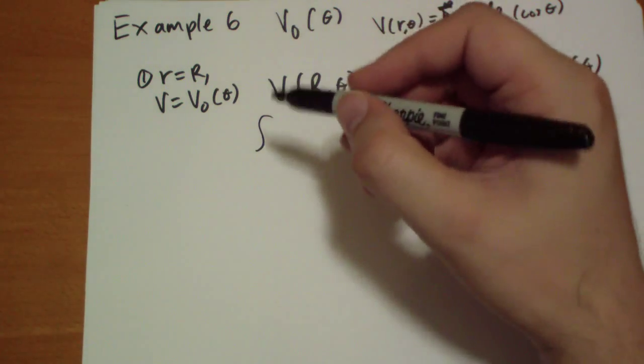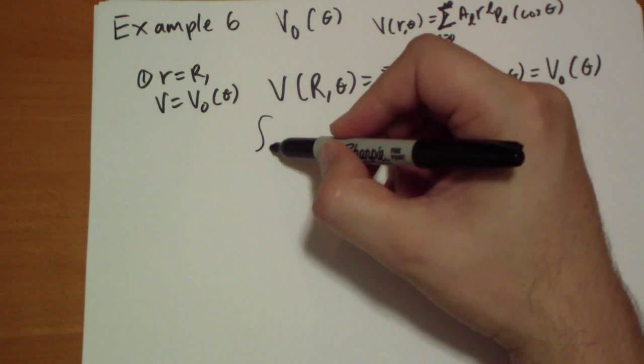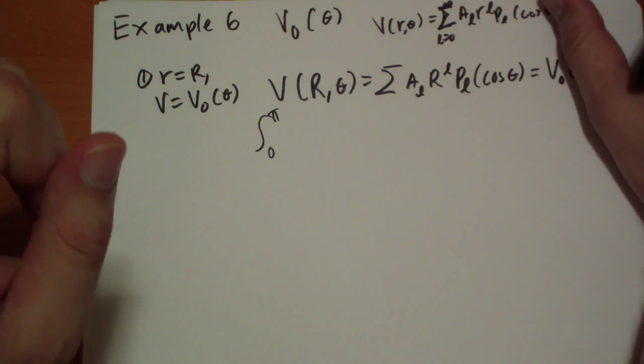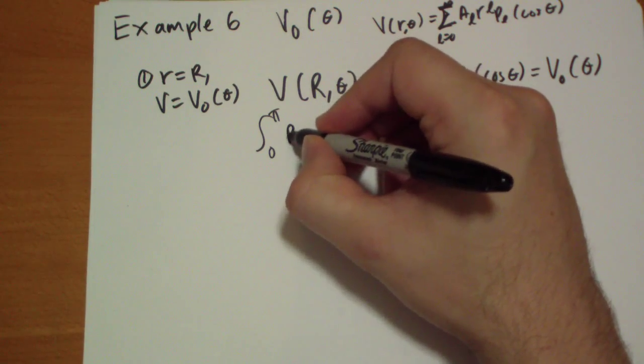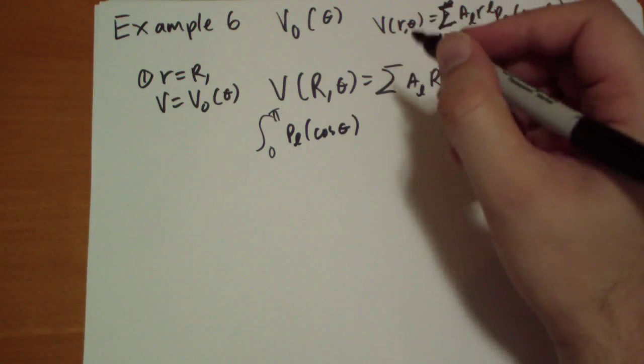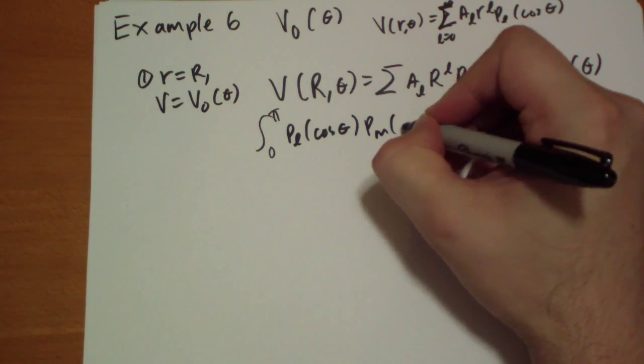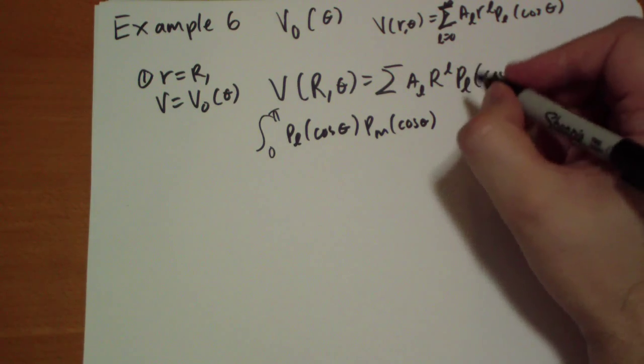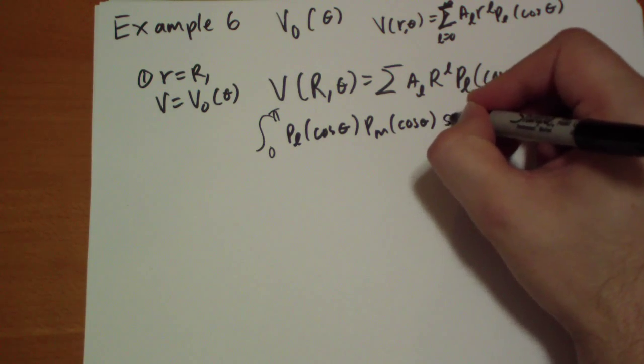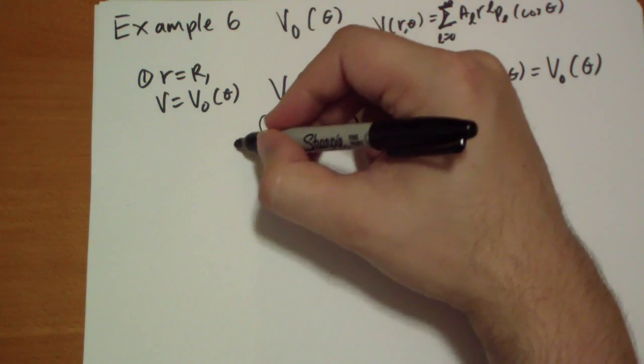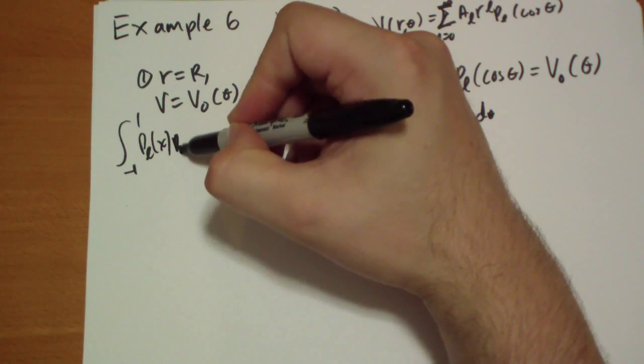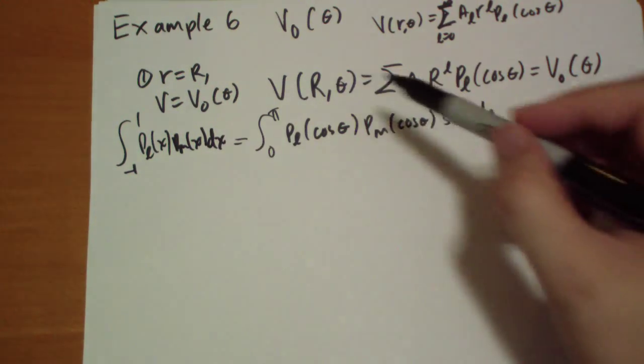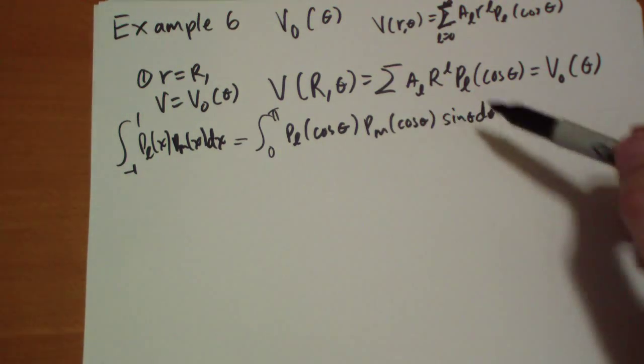So we're going to go from 0 to pi, because theta is the—I forget the name of it but it's the one that goes up and down, so you're not going to go around and come back around the other end, it's just up and down. So P_l of cosine theta, P_m of cosine theta, and then sine theta d theta. Where did that come from? Well you're really taking the integral from minus 1 to plus 1 of P_l of x and P_m of x dx. So when you substitute x equals cos theta, then your dx is going to be sine theta d theta.